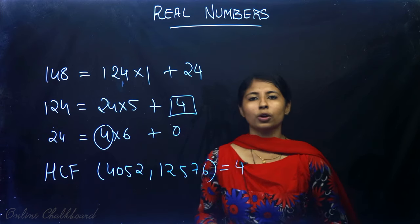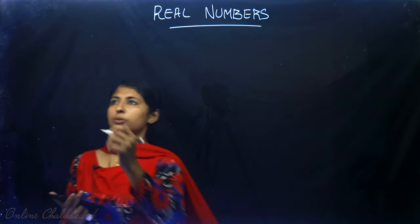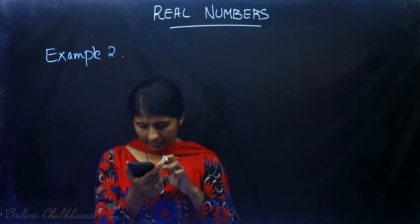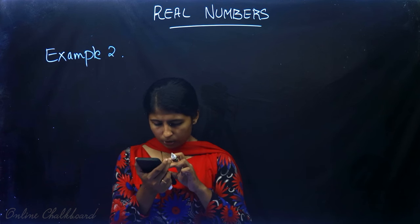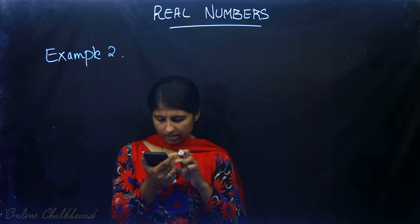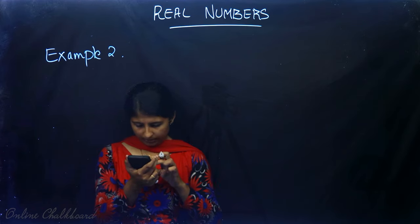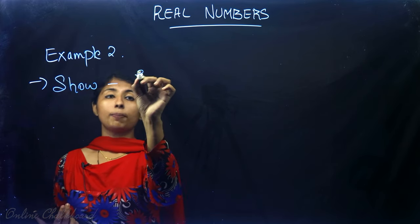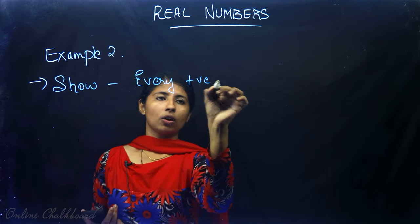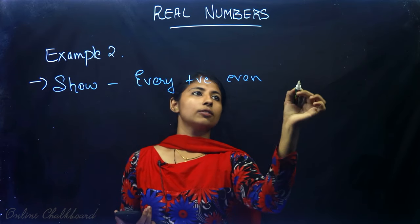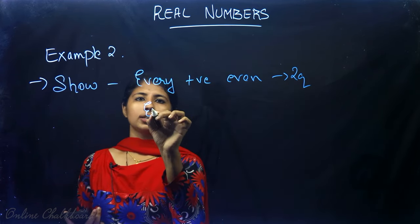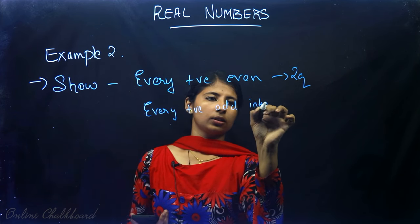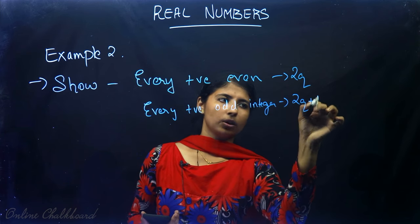Now let's move on to Example 2, on page number 6: Show that every positive even integer is of the form 2q, and that every positive odd integer is of the form 2q + 1.